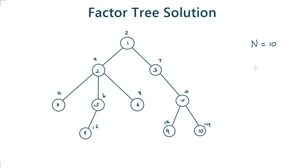In this problem we are given a tree with n nodes and n-1 edges. In this case n is equal to 10. The nodes are numbered from 1 to n, and each node is given a value. For example, node 1 is given a value of 2 and node 2 is given a value of 9.